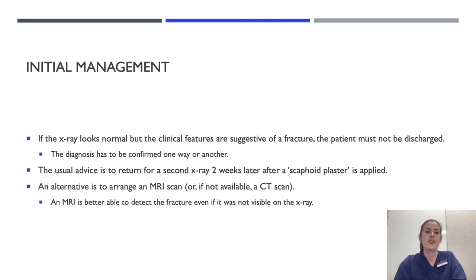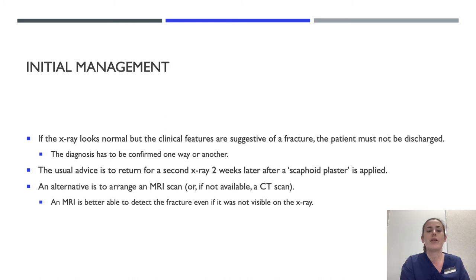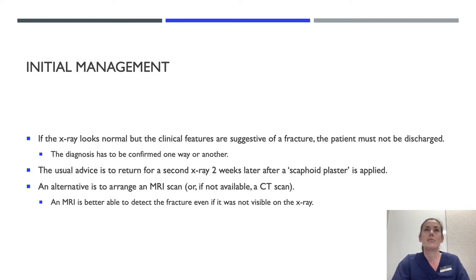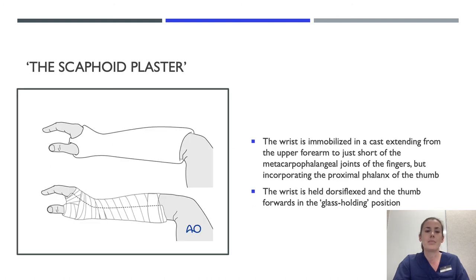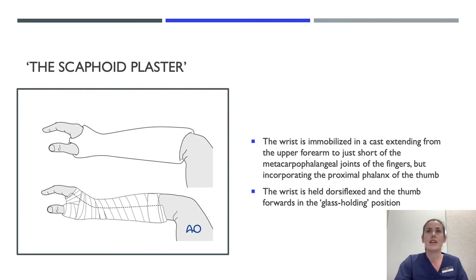For initial management of a scaphoid fracture: if the X-ray looks normal but clinical features are suggestive of a fracture, do not discharge the patient as you need to confirm it one way or another. The usual advice is to return for a second X-ray two weeks later after a scaphoid plaster is applied. An alternative is to arrange an MRI, or if not available, a CT scan. In the scaphoid plaster, the wrist is immobilised in a cast extending from the upper forearm to just short of the metacarpophalangeal joints of the fingers, incorporating the proximal phalanx of the thumb, with the wrist held dorsiflexed and the thumb forward in the glass-holding position.